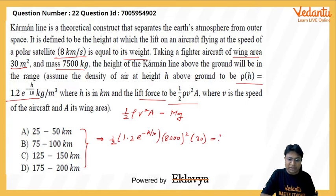So m is given as 7500, and g is 10. So we can solve for h.